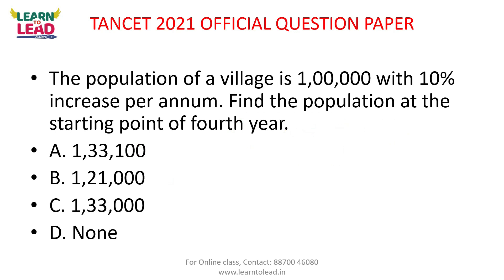The population of a village is 1 lakh with 10% increase per annum. Find the population at the starting point of the 4th year. Starting point of 4th year = end of 3rd year, so N = 3. Population grows on compound interest basis: 3 years at 10%.